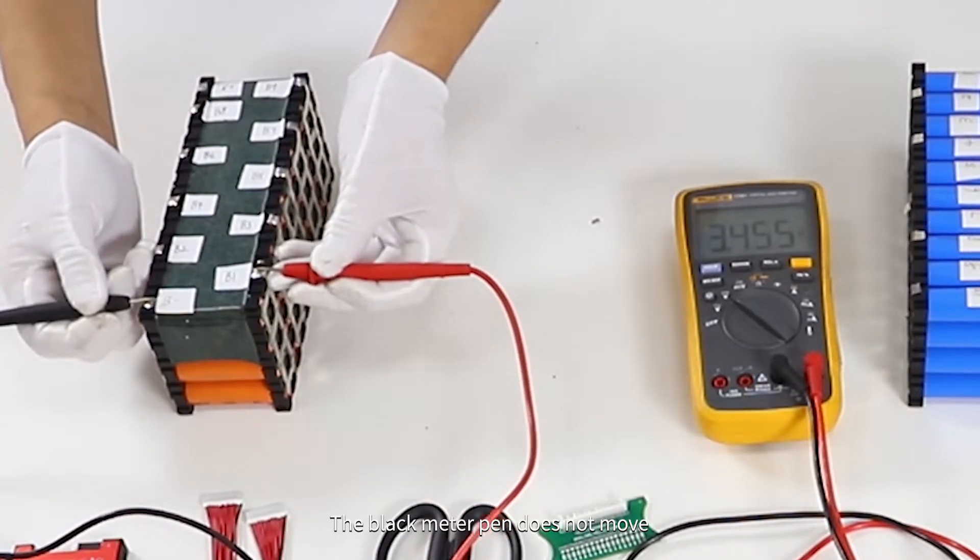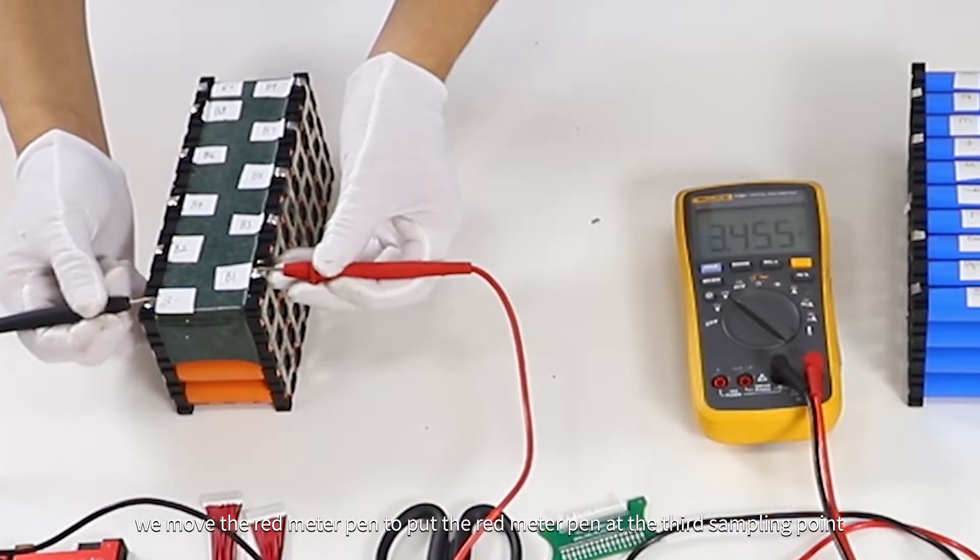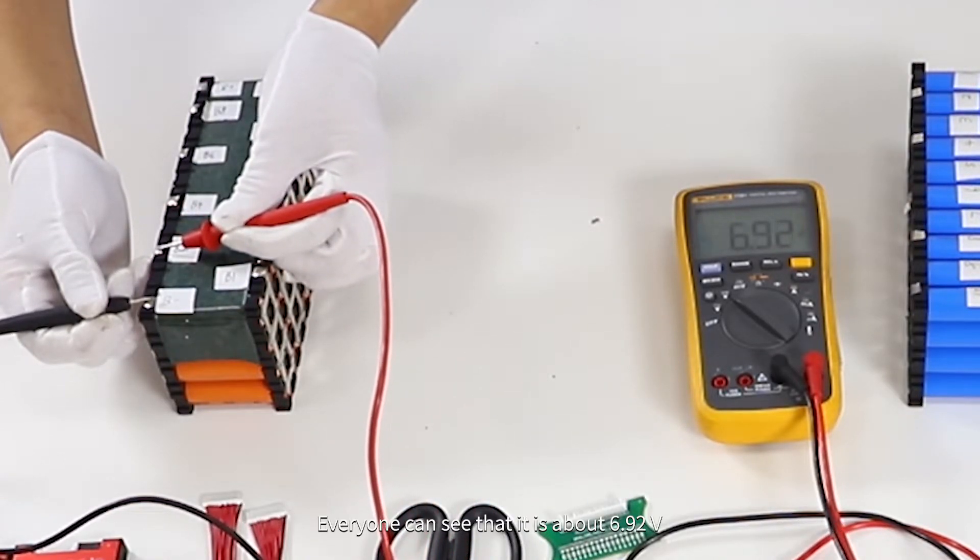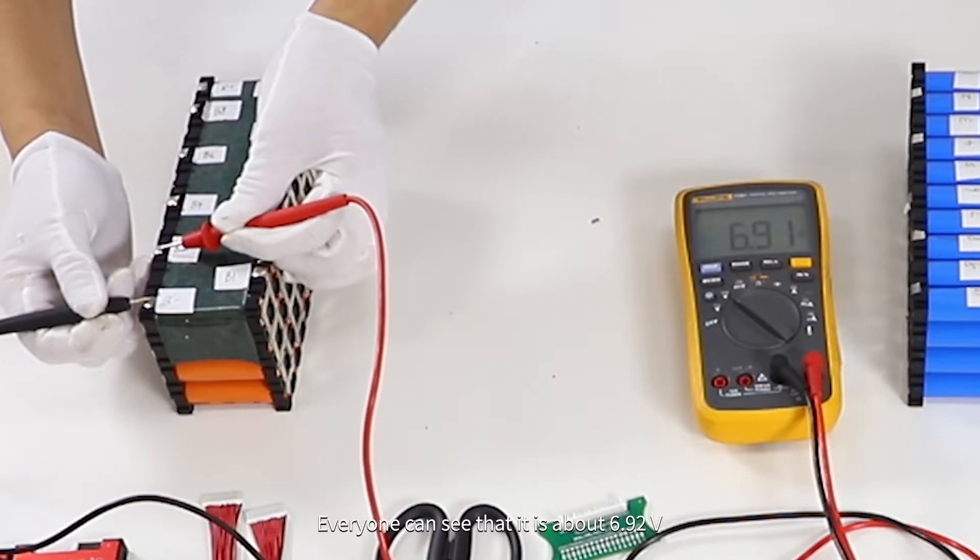The black meter pen does not move. We move the red meter pen to put it at the third sampling point. Everyone can see that it is about 60.92V.